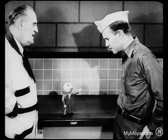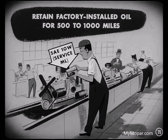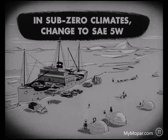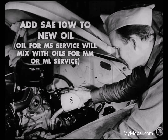A heavier oil thins out much less at high temperatures, so it provides a better oil cushion, which reduces bearing wear. That's important, since higher speeds increase the load on bearings. So SAE 30 is recommended for use after the break-in period, and for temperatures above 32 degrees. The factory-installed oil in engines not equipped with torque converters is a highly refined oil having a viscosity of SAE 10W. It's designed for service ML. Keep that factory oil in new engines for the first 500 or 1,000 miles, depending on the make of car, before you change it.